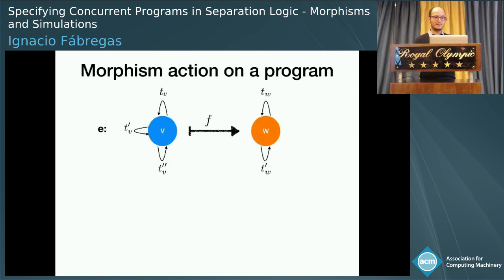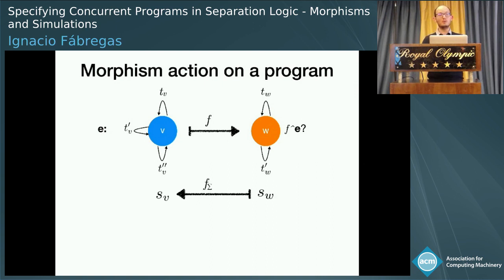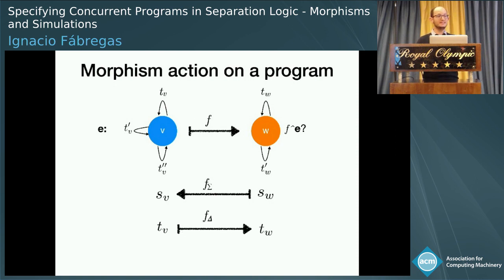Let's think: we have a program E in some resource B, and we want to know which is going to be the morph of that program — what is F-E? The morphism has two components. We need to say, for each state in W, what is going to be the state in B, and for every transition in B, we need to say which is going to be the transition in W. So we start with a state in W, the morphism gives us a state in B, and there we know we have to perform transition T-b.